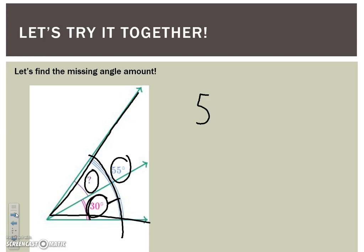What we're going to do is use subtraction. We take the measurement of the whole angle, which is 55 degrees, and we subtract the angle measurement that we know, which is 30. 5 minus 0 is 5, 5 minus 3 is 2, to find our missing angle part right there, which is 25 degrees.